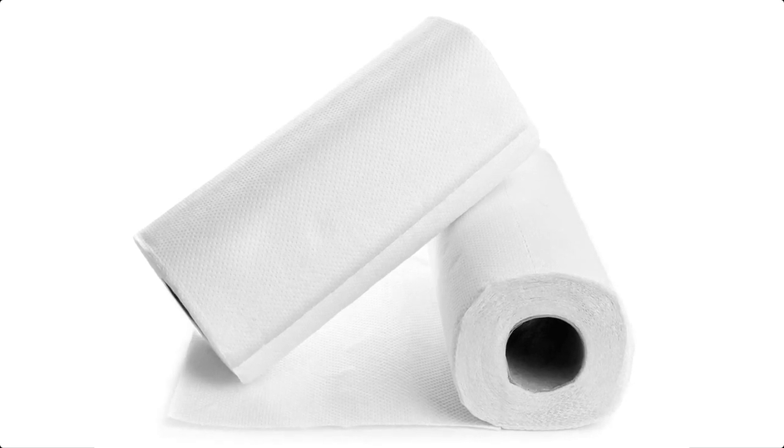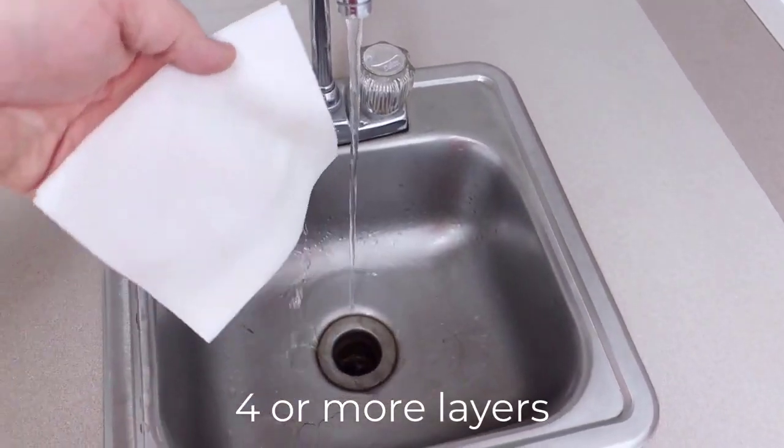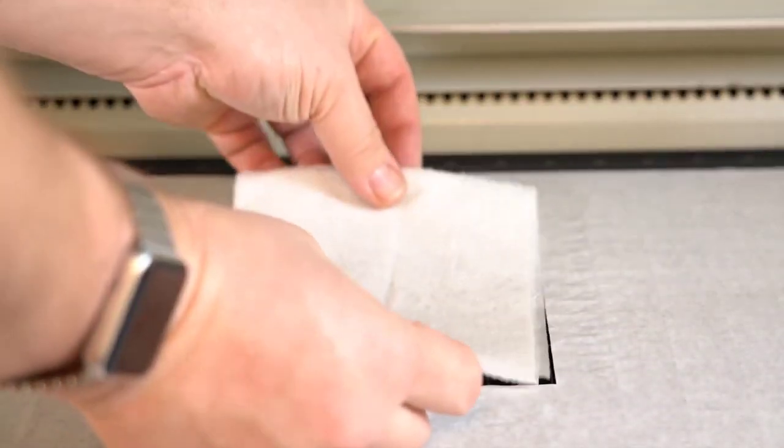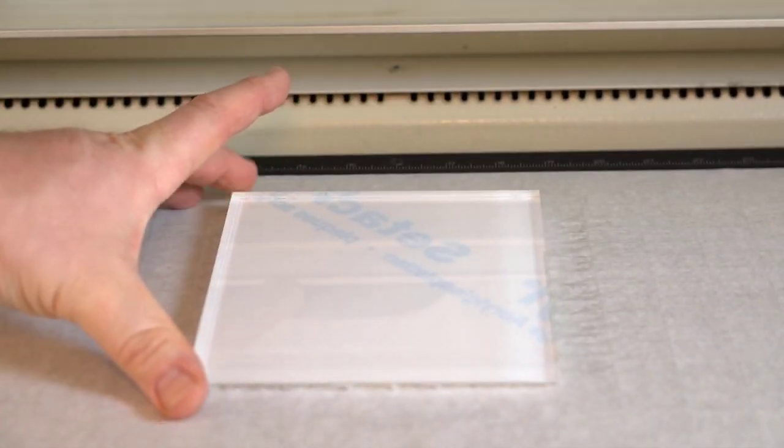For this laser hack we are going to use common household paper towels. First, take four or more layers of folded paper towels and wet them down with water. Now place the wet paper towels onto the surface of the vector cutting grid and place the acrylic onto the wet paper towels.